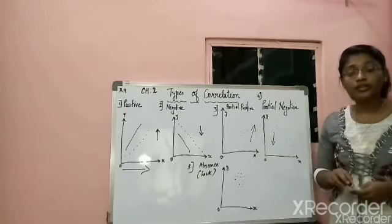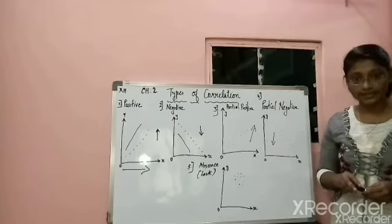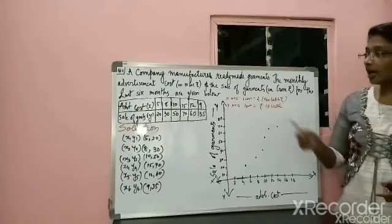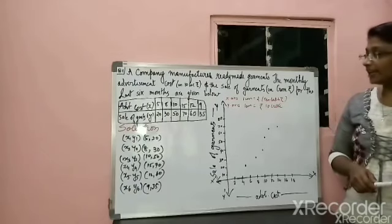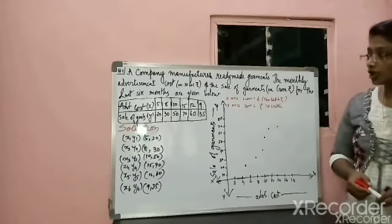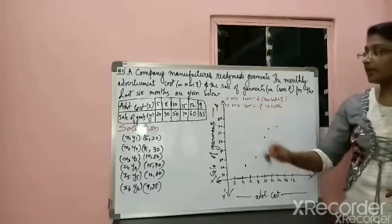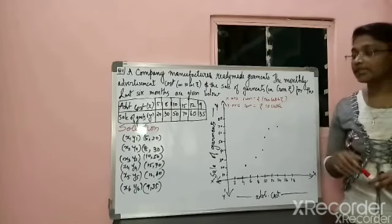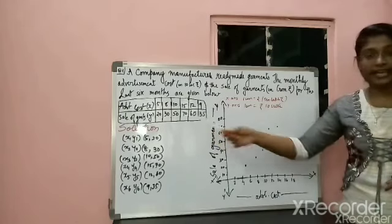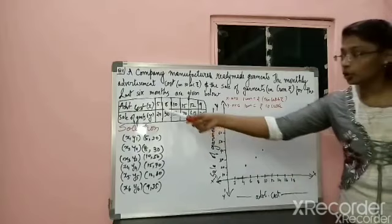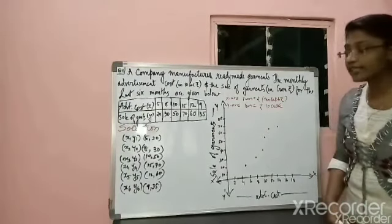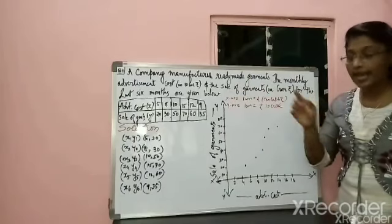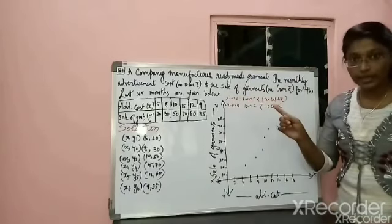This will be more clear if we solve a sum. The question: a company manufactures ready-made garments. The monthly advertisement cost in 10 lakh rupees and the sale of garments in crore for the last six months are given. The two variables are advertisement cost as X and sale of garments as Y.